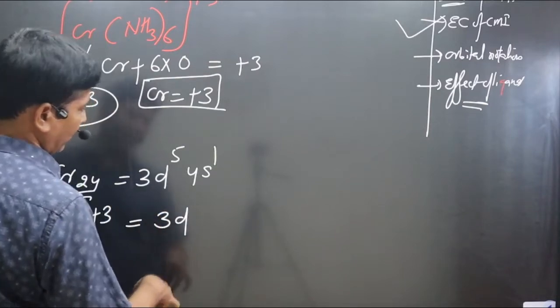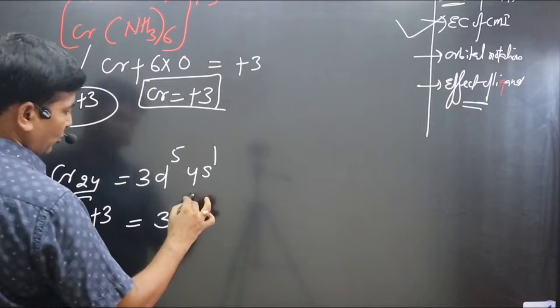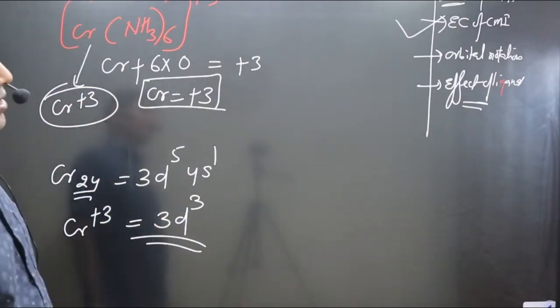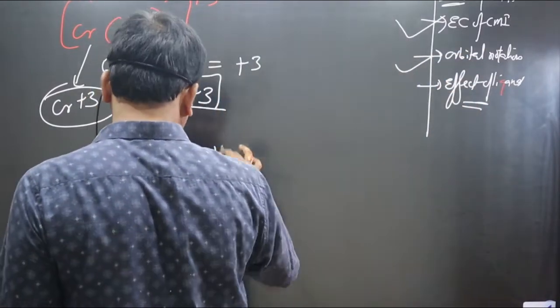The electronic configuration will be one electron from 4s, two electrons from 3d. Overall three electrons removed, so it will be 3d3. This is the electronic configuration. Next step we have to follow is writing orbital notation.